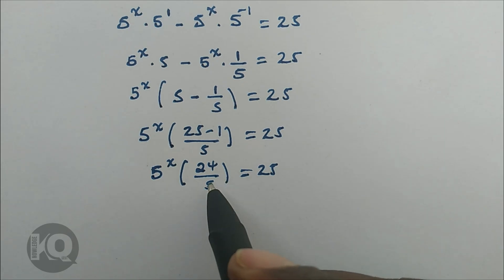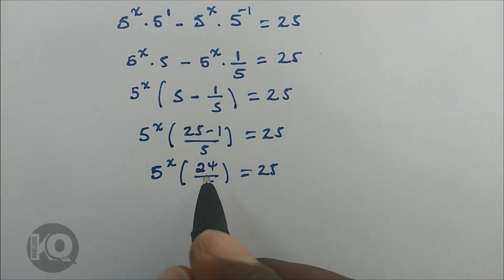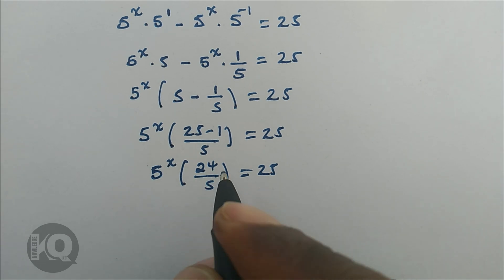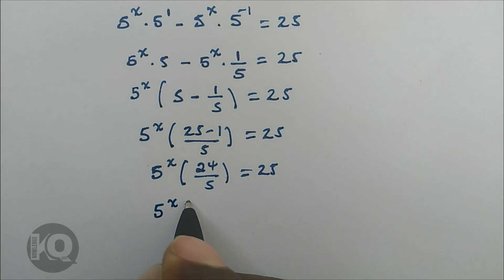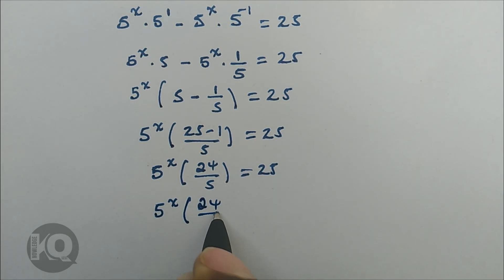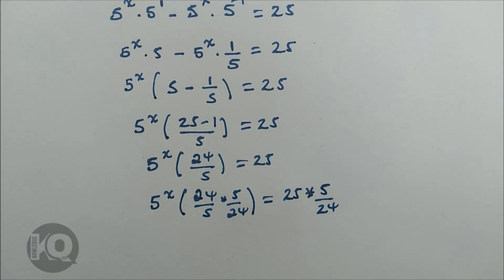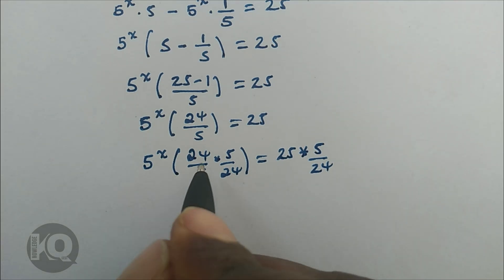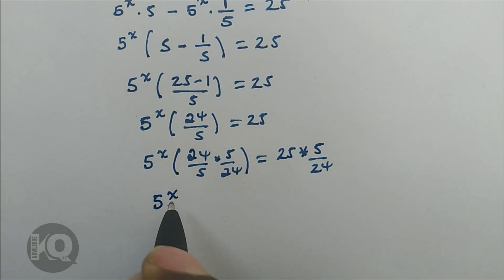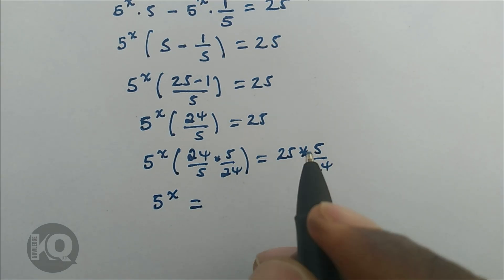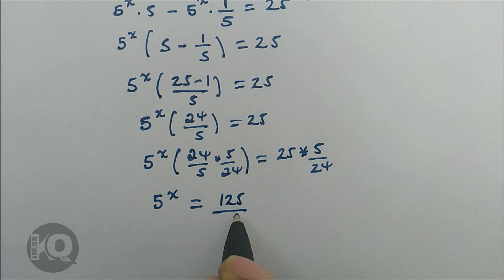To eliminate the 24 over 5, we multiply both sides by 5 over 24. So 5 to the power of x times (24 over 5) times (5 over 24) equals 25 times 5 divided by 24. The left side simplifies to 1, so 5 to the power of x equals 25 times 5, which is 125, divided by 24.